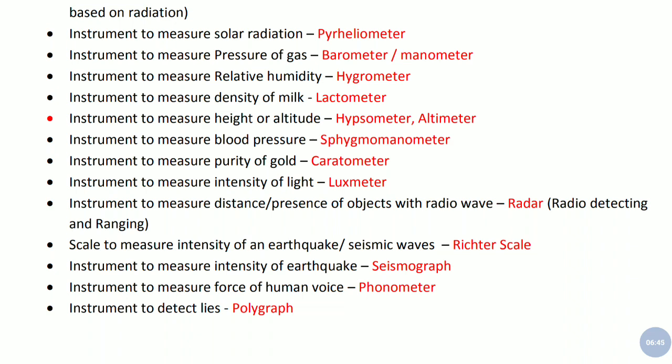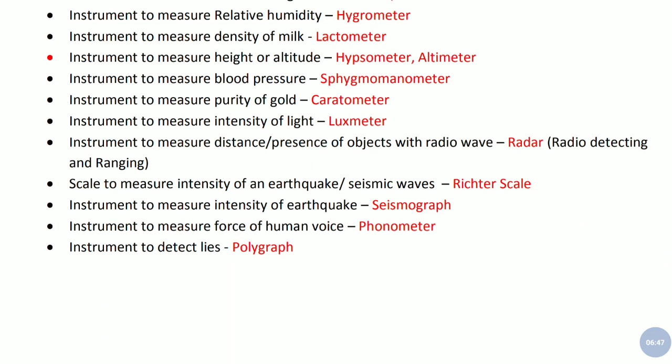Instrument to measure purity of gold - caratometer. Basically gold purity is measured in carat, so it is caratometer. Instrument to measure intensity of light - luxmeter. Instrument to measure distance or presence of objects using radio wave - it is radar, radio detecting and ranging.